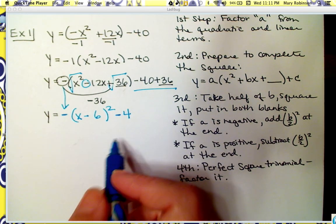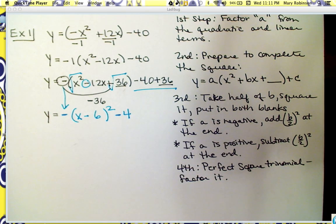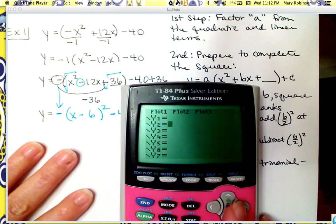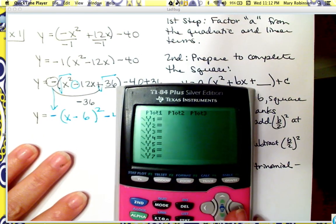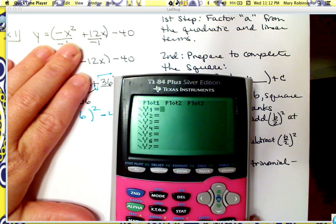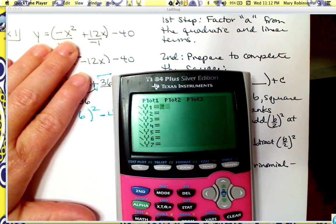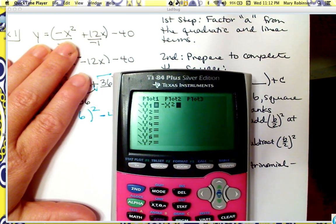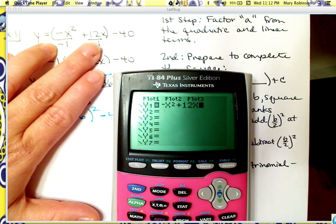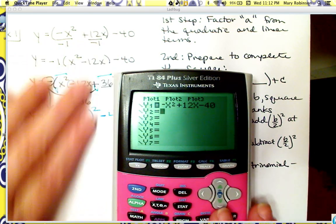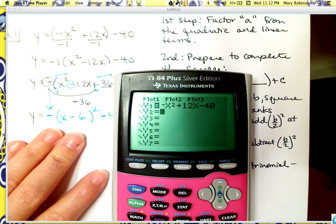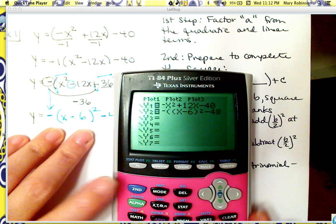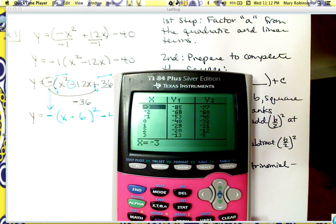That's vertex form. But we still want to do the last step — to verify these are equivalent. We type our original standard form, negative x squared plus 12x minus 40, into the calculator as y1, and then type in our vertex form as y2, and check to see that they are equivalent.